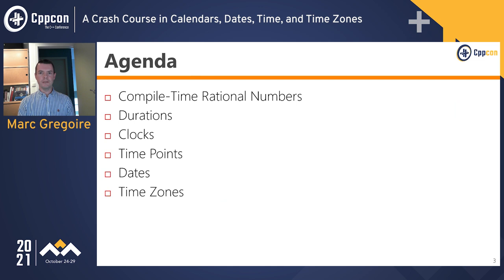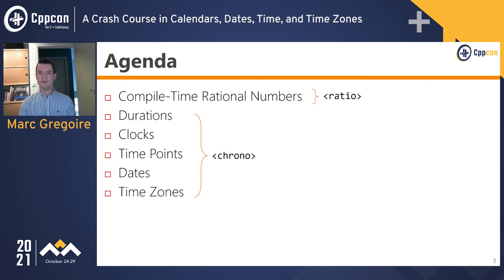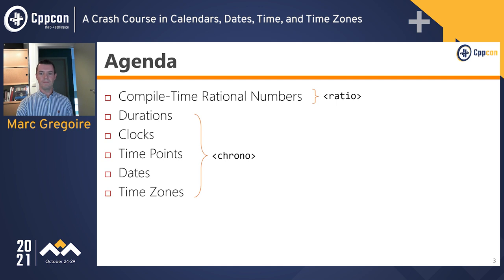I'll be talking about the following topics: compile-time rational numbers, durations, clocks, time points, dates, and time zones. Only the last five of these are part of the so-called Chrono Library. The first one is part of the Ratio Library. However, I will briefly discuss the Ratio Library because we will need it during the discussion of durations. I'll go through all the material first and then answer questions at the end. There are slide numbers in the lower right corner for reference.